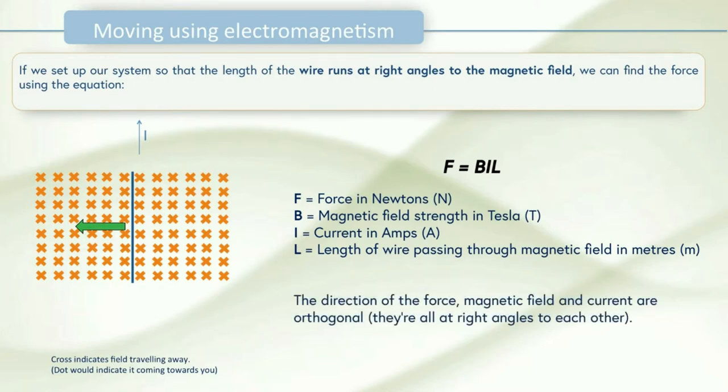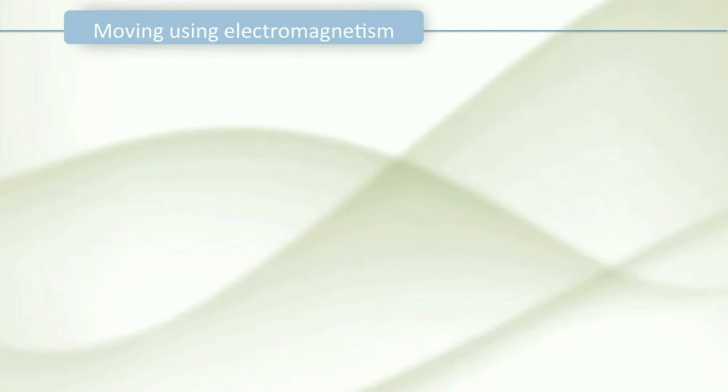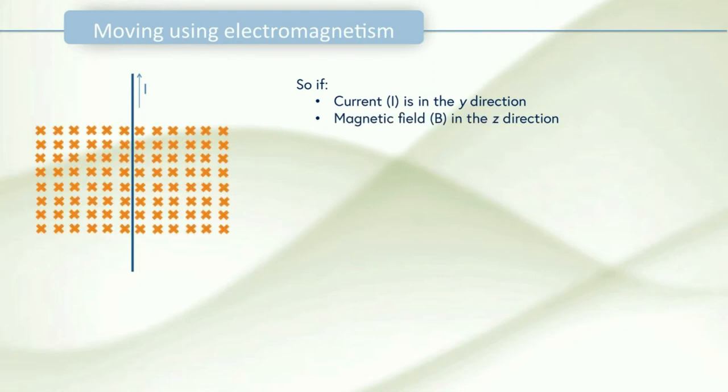The direction of the force magnetic field and current are orthogonal. This means that they're all at right angles to each other for this equation to apply. So if we have our wire and our current I is in the y direction the magnetic field B is in the z direction so it's going into the screen. Then the force the wire will experience F is in the x direction. So these are all at 90 degrees to each other. This is what our orthogonal term means.